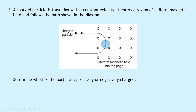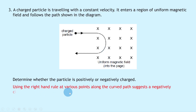At the next point along the path, the particle is bending to the left, so the force is to the left. With the index finger into the page and the thumb pointing to the left, the middle finger points downwards — which matches the direction the particle is moving at that point. The right hand rule works at both points, which means the particle must be negatively charged. If the forces had been in the opposite direction, it would be positively charged.